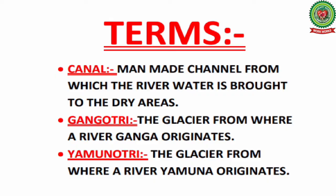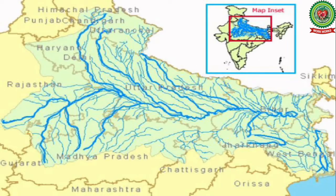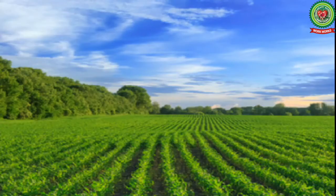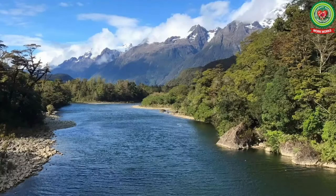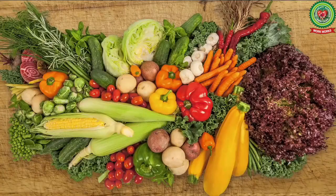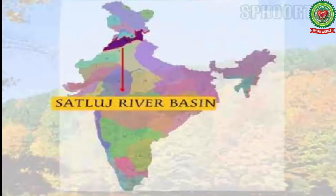First, let us understand what a basin is. A river basin is the portion of land drained by a river and its tributaries. River basins have fertile soil and water resources, and because of this, a great deal of food and agricultural products are produced here.